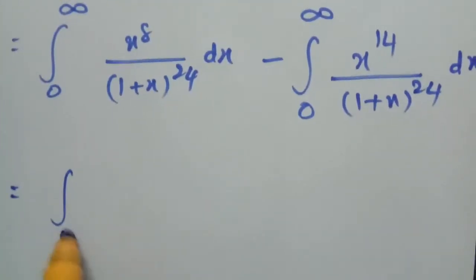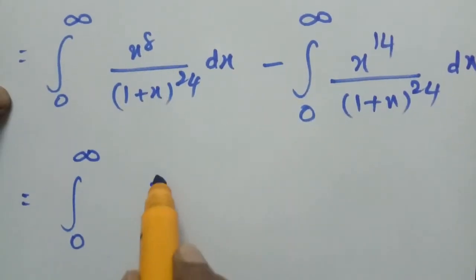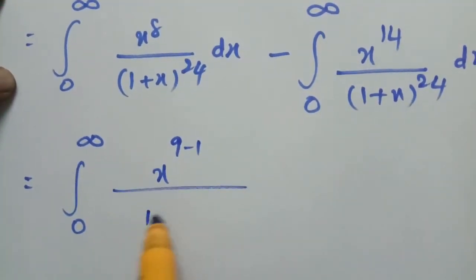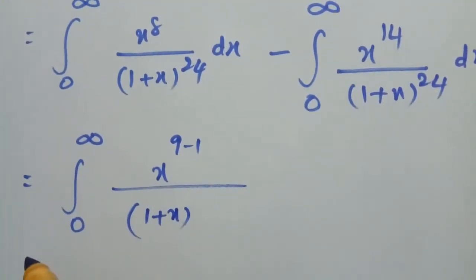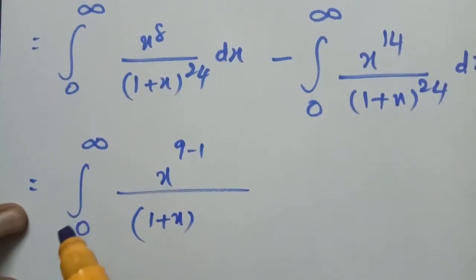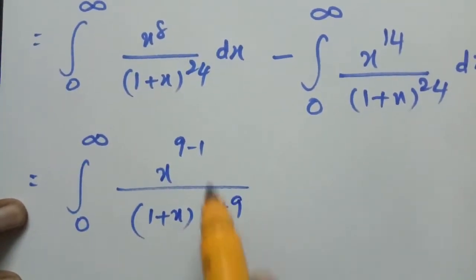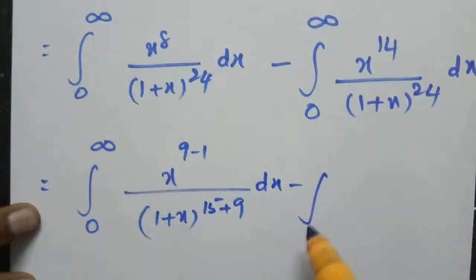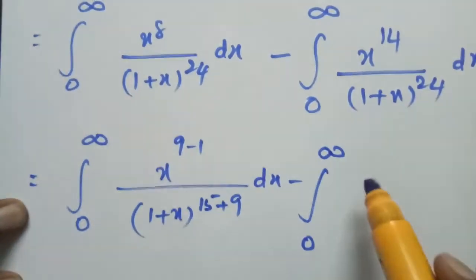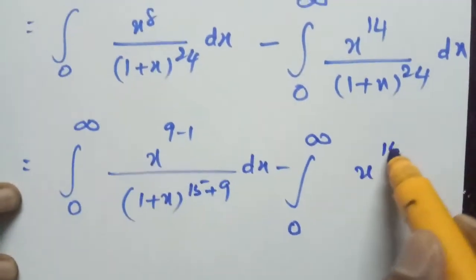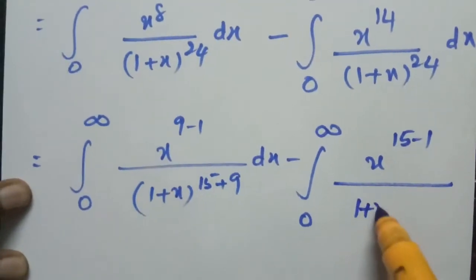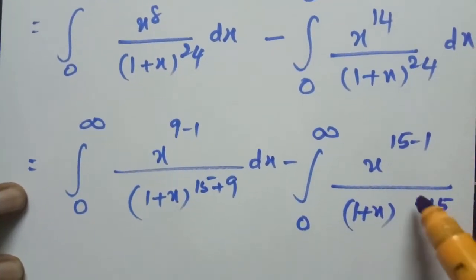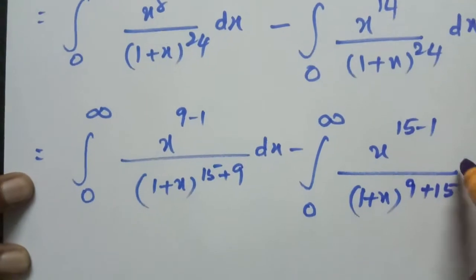Therefore, this can be written as the integral from 0 to infinity of x to the power 8, written as (9 minus 1), divided by (1 plus x) to the power 24, written as (9 plus 9), minus the integral from 0 to infinity of x to the power 14, written as (15 minus 1), divided by (1 plus x) to the power 24, written as (15 plus 9), dx.